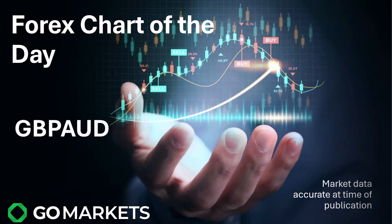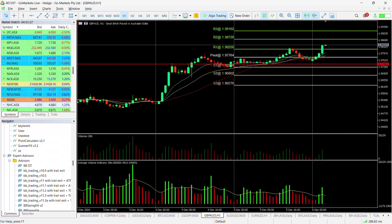Welcome to today's extra chart of the day. Today we have a forex chart of the day and we're looking at the GBP/Australian Dollar. We've seen some weakness in the AUD across the board, but particularly with this — it looks technically interesting. Let's have a look at the chart. A couple of things here that are very noteworthy.